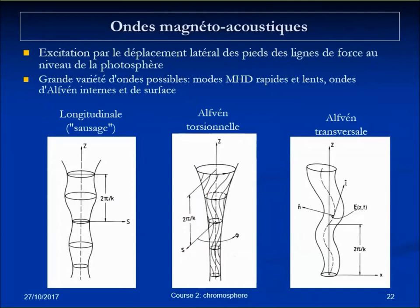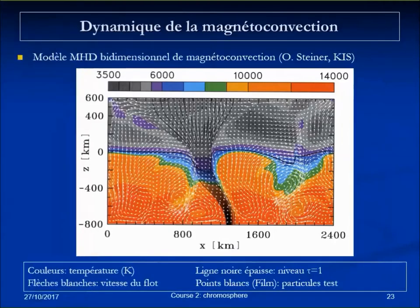MHD waves come in many varieties. The main kinds are sausage, torsional, and kink waves — kink waves being essentially like the string of a guitar oscillating laterally. In magnetic fields, different kinds often coexist. There are theoretical numerical models representing a small element of the chromosphere.